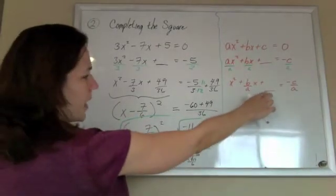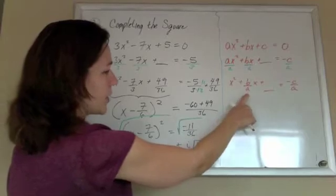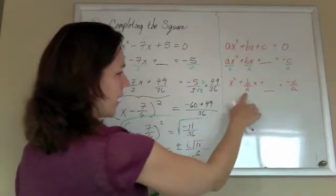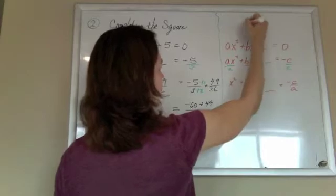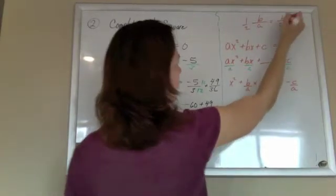So the number I'm going to add there, half and square that middle number. So half of b over a is... sorry, I mean half of b over a, so that's b over 2a.